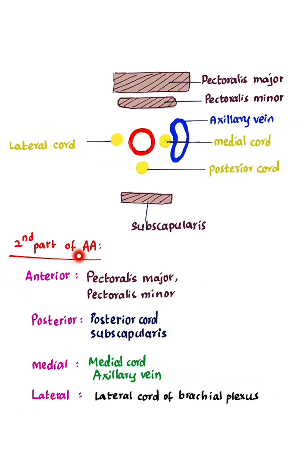Relations of the second part of the axillary artery. The second part lies deep to pectoralis minor, so anteriorly there is pectoralis minor and pectoralis major. Posteriorly, there is the posterior cord and subscapularis. Laterally, there is the lateral cord. Medially, there is the medial cord and the axillary vein.